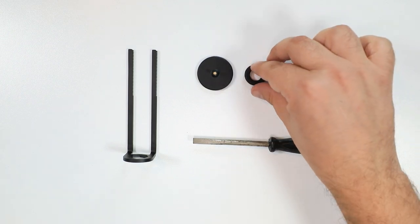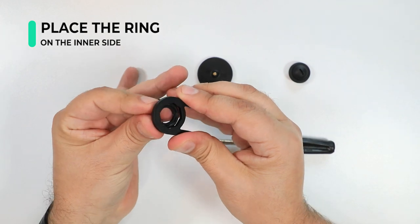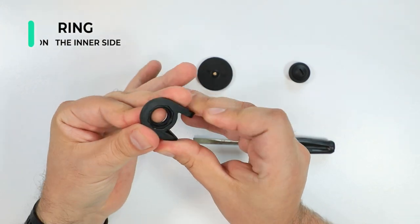Place the ring on the inner side of the clamp. Then place and wind the ball head screw cap against this ring.